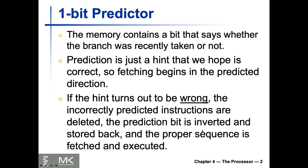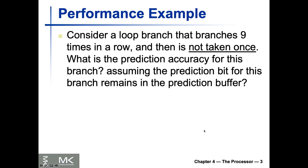A hypothetical case: say you have a loop branch that branches nine times in a row. Using that one-bit branch prediction, what is the prediction accuracy for this branch, assuming the prediction bit remains in the prediction buffer? The bit has already been set before we start the loop — either take it or don't take it — and then we want to run the loop nine times.